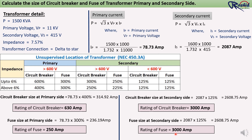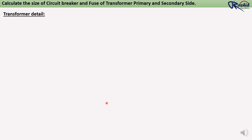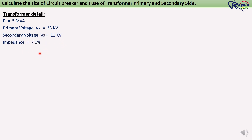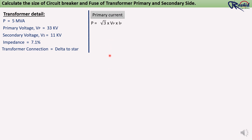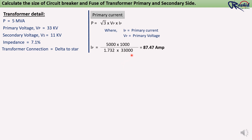Let's take one more example for a power transformer. Here we are using a 5 MVA rating transformer. Primary voltage is 33 kV and secondary voltage is 11 kV. Impedance is 7.1%, and transformer connection type is delta-star. For primary current: Ip = (5000 × 1000) ÷ (1.732 × 33,000) = 87.47 ampere.